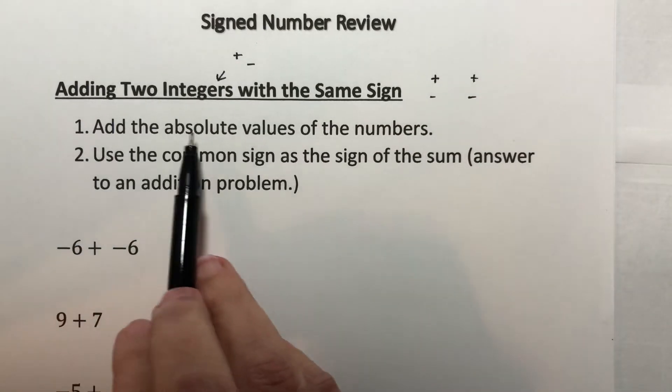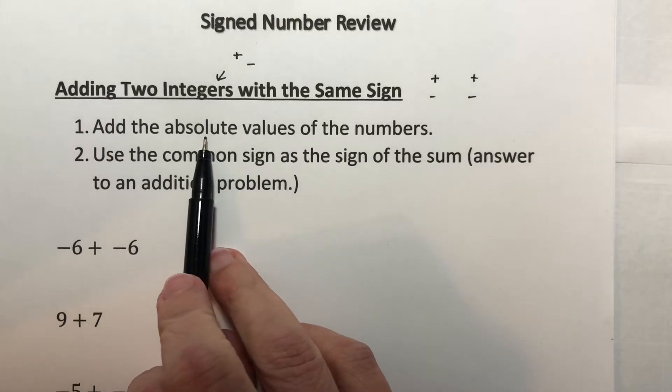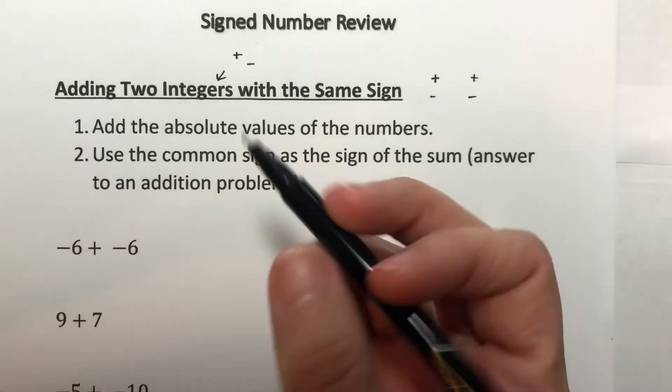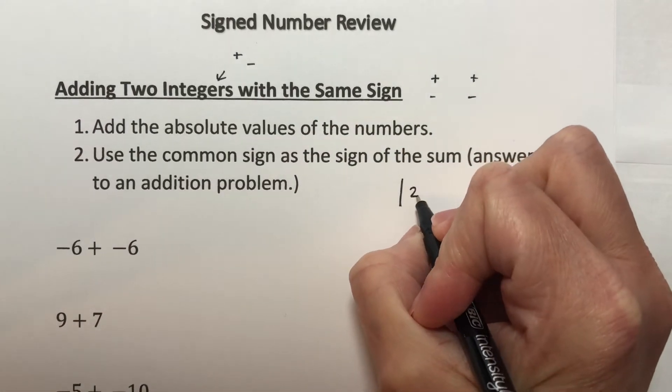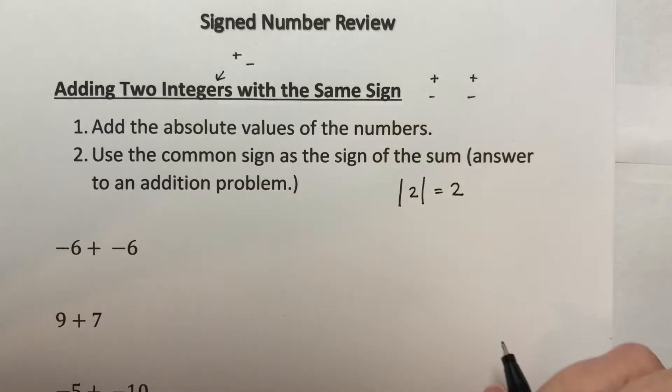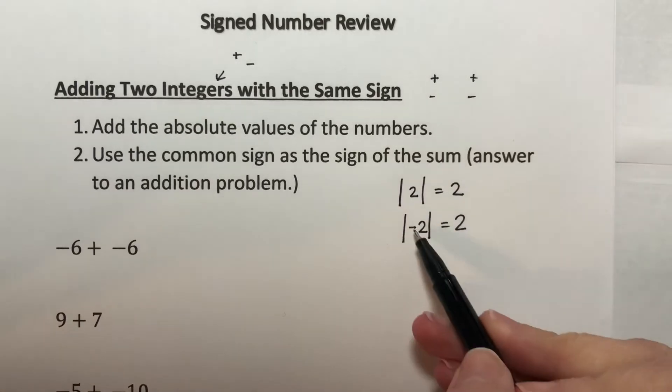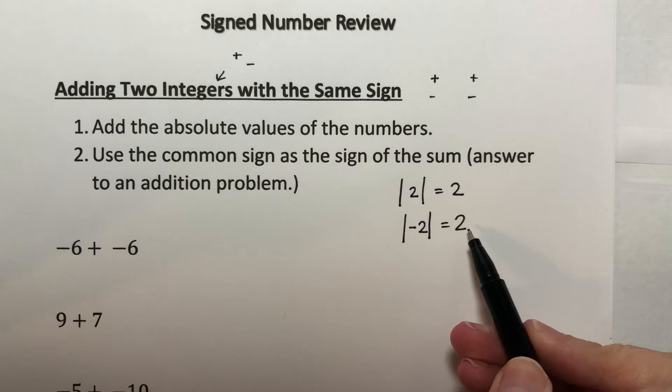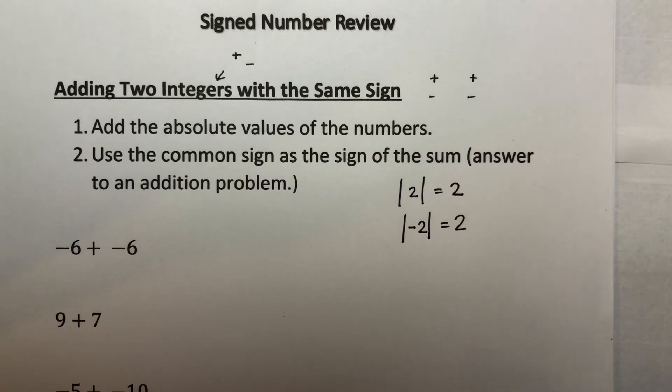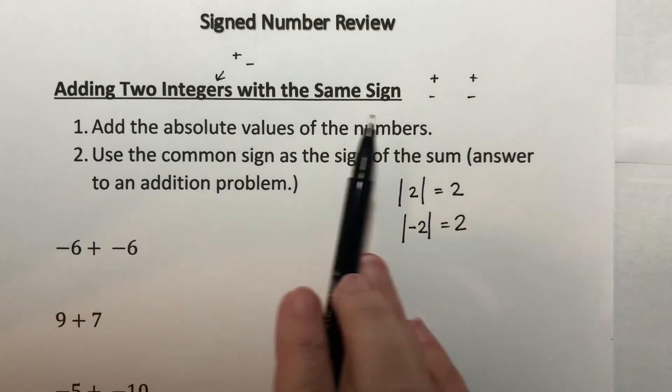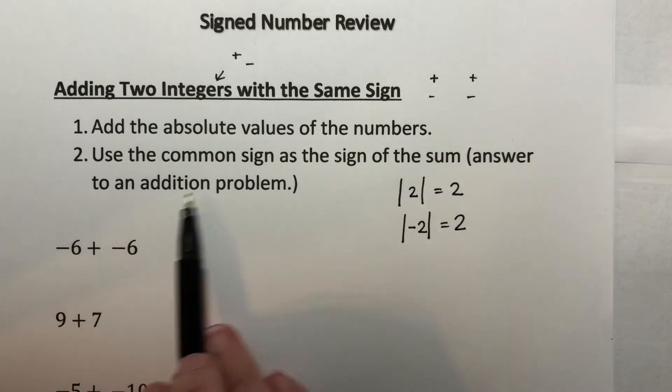What you do is you add the absolute values of the numbers. That means the absolute value is the number without a sign. So the symbol we use for absolute value are two straight lines. If I ask you for the absolute value of two, it is two. The absolute value of negative two is also two. You take whatever's inside and you make it positive. If it's already positive, it stays positive. That's what we mean by absolute value. We add the absolute values of the numbers and then use the common sign as the sign of the sum. The answer to an addition problem is a sum.